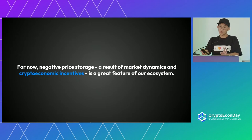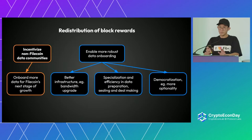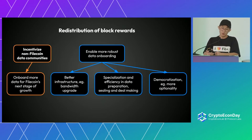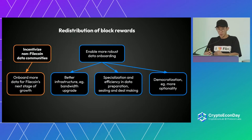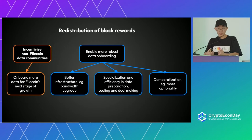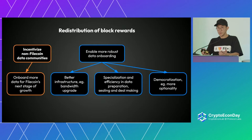Negative price storage is basically a redistribution of block rewards from storage providers, flowing down to a few other teams. We want this redistribution to happen because it will incentivize non-Filecoin data communities into our network — this is the next stage of growth of Filecoin. At the same time, this redistribution enables more robust data onboarding: teams are being built around sealing-as-a-service and better data preparation services, and there are markets for that right now.